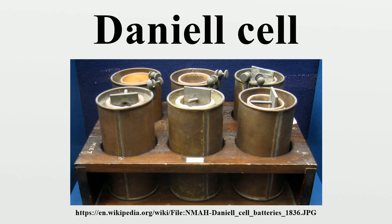Daniell first constructed his cell in 1836. His original design consisted of a 3.5-inch diameter copper cylinder. A copper disc perforated with numerous holes was placed across the cylinder, recessed down from the top. A tube of ox gullet hung from a large hole in the center of the perforated copper disc. A 0.5-inch diameter zinc rod hung inside this ox gullet tube suspended from wooden supports. The copper vessel was filled with sulfuric acid solution saturated with copper sulfate to above the level of the perforated disc. The ox gullet tube was filled with sulfuric acid solution, and copper sulfate crystals were piled on the perforated copper disc to keep the solution saturated. The ox gullet acts as a porous membrane allowing passage of ions.